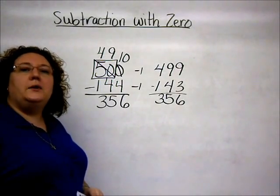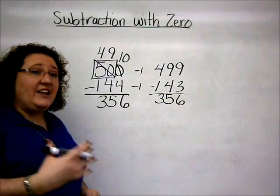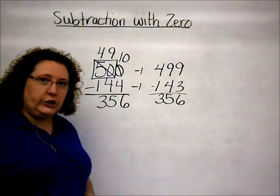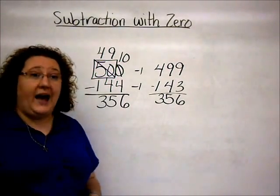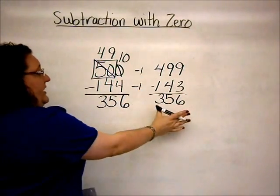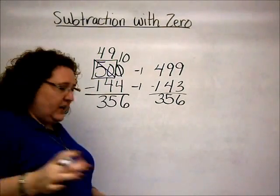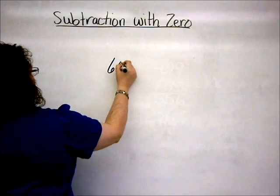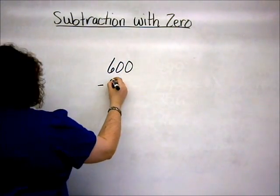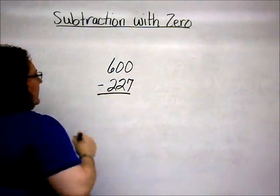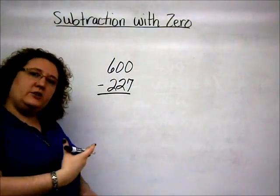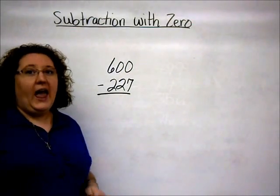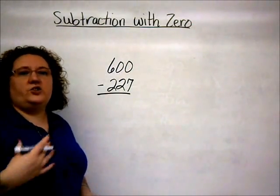I'm going to provide another problem for you to try. You can use either method, it does not matter, on the test. I will not say which method you need to use. You just have to show whatever work you have, whether it be the boxing or the subtracting of one to write the new problem. So here's the problem that I'd like for you to try. We're going to use six hundred minus two hundred twenty-seven. So, stop the video, give this problem a try in either method, or you could even try both as a way to check yourself. After you work them out, start the video again so you can check the answer.